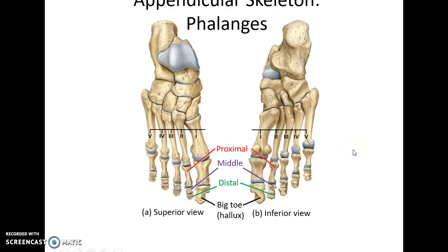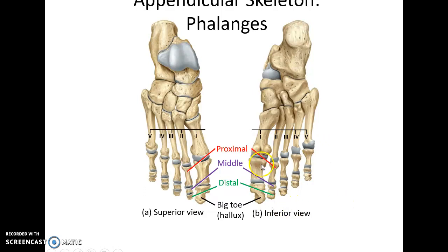The phalanges make up the toes — the same names as the finger bones. They are also numbered 1 through 5 and are additionally named proximal, middle, and distal. So this is proximal phalanx 2, middle phalanx 2, distal phalanx 2. And again, the big toe, or great toe, only has a proximal and distal phalanx.